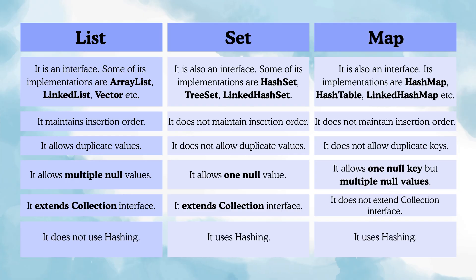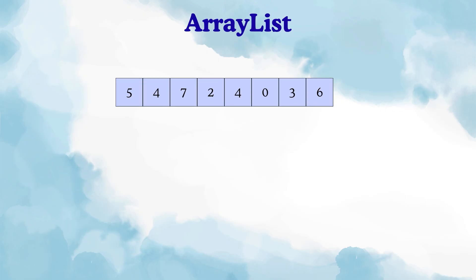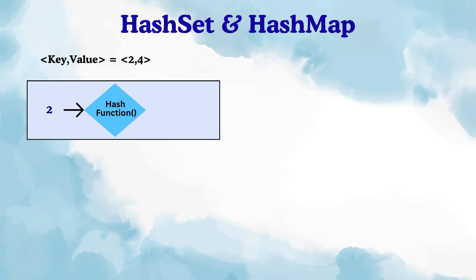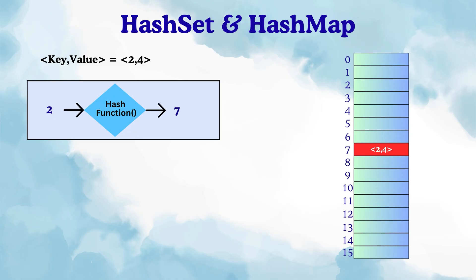HashMap and HashSet use hashing when inserting and fetching entries, whereas List does not. When we add an element to a list, it is simply appended at the end or at a specific index — no hashing involved. However, when we add an entry to a Set or Map, the key is passed to a hash function, which generates a hash value (a small integer), used as the index where the entry will be stored internally.